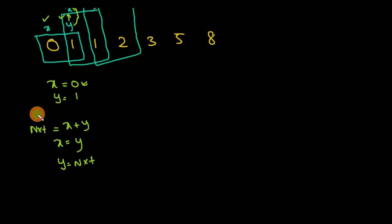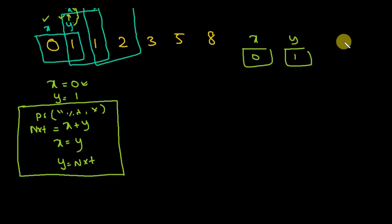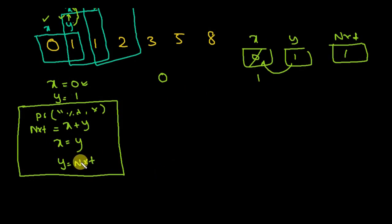Let's dry run the program. Start with X equals 0, Y equals 1, and next has no value. First, print X so 0 is printed. Then compute X plus Y: 0 plus 1 equals 1, stored in next. Take Y's value and put it in X — X is now modified. Take the next value and put it in Y — Y is now modified.